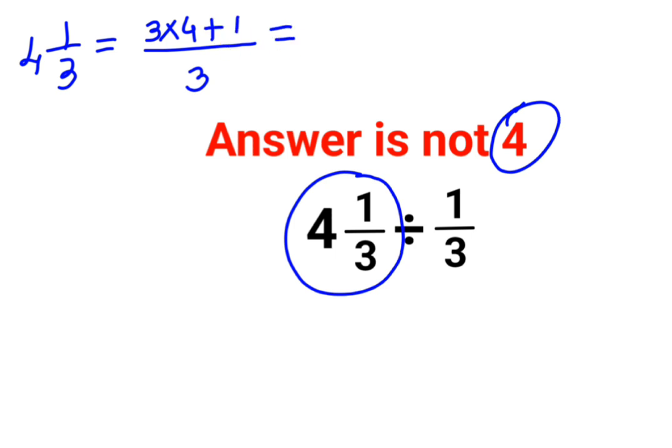And whatever is the product gets added to the numerator. So, this then becomes 4 multiplied by 3 is 12 plus 1, the answer is 13 by 3. So, 13 by 3 divided by 1 by 3.